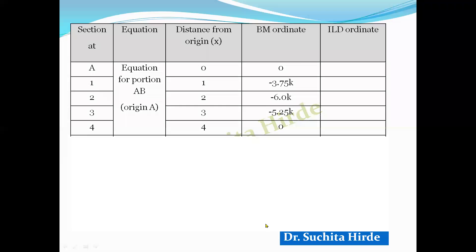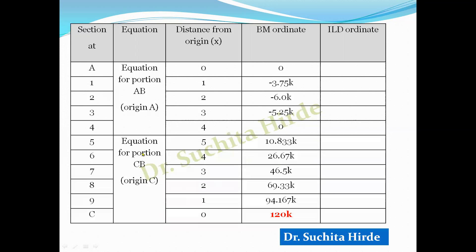Solving in tabular form: for portion AB (origin at A) at x = 1, 2, 3, 4 meters, the bending moment ordinates are computed from Mx = −4Kx + Kx³/4, giving negative values (shape below the line). For portion CB (origin at C) at x = 1 to 6, the ordinates are positive (shape above the line). The ordinate at C is 120K, so we divide all ordinates by 120K to achieve unit deformation.